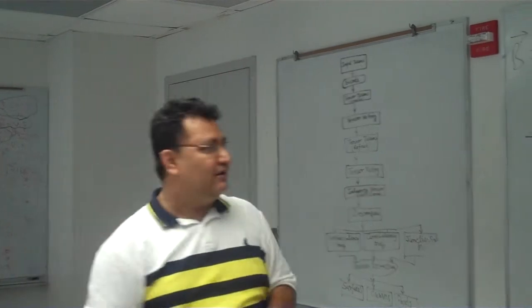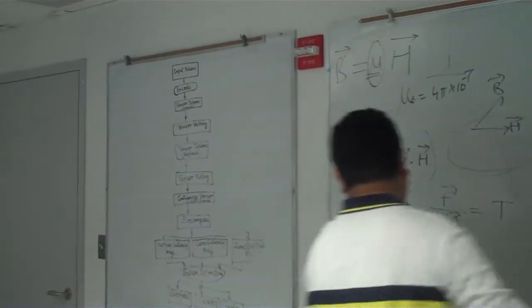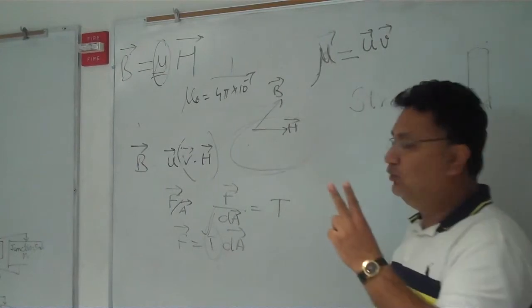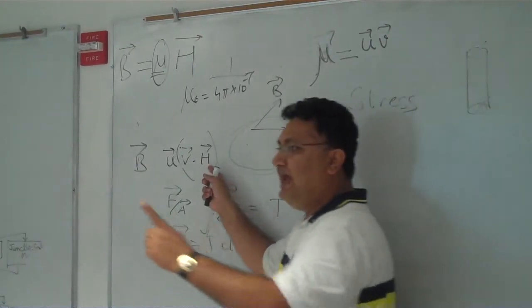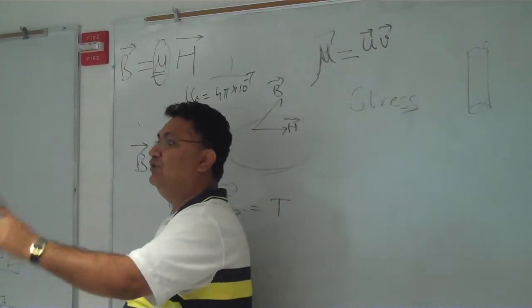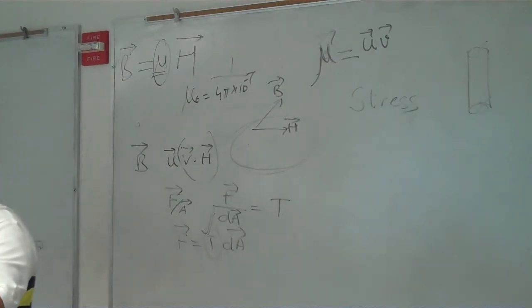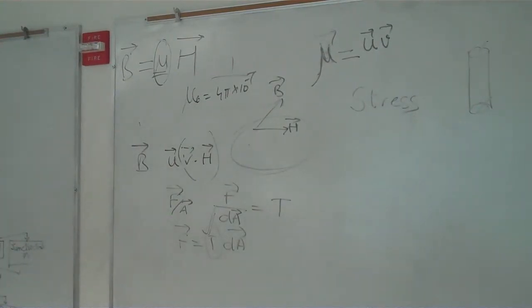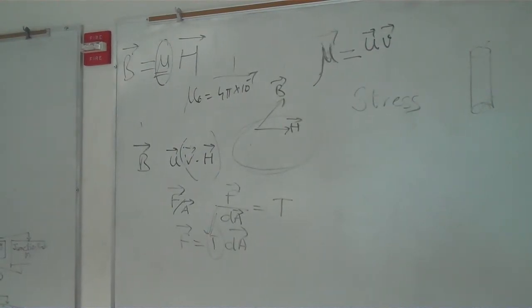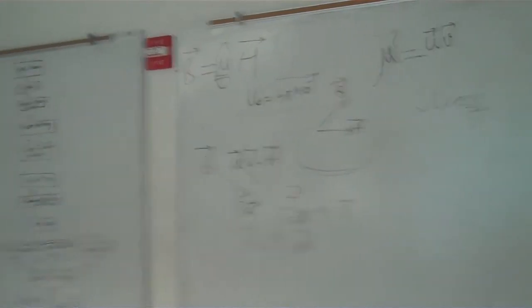And it depends upon rank of tensor. Like it has two directions, it is of rank two. Vector normally have one direction, so vector is tensor of rank one. Scalar has no direction, so scalar can be said as tensor of zero rank.